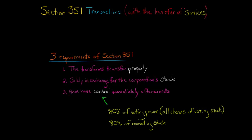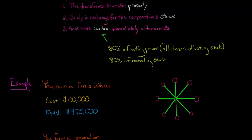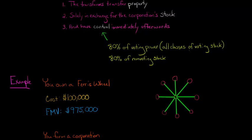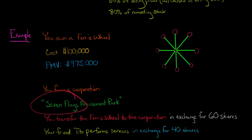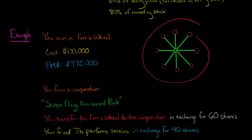And the short answer is no, but it's a little more complicated than that. Let me give you an example. So let's say that you own a Ferris wheel, and it costs $100,000, that's your basis in it, and it has a fair market value of $975,000, it's appreciated. And so you form a corporation called Seven Flags Amusement Park, and you transfer the Ferris wheel that you own to the corporation in exchange for 60 shares of voting stock.